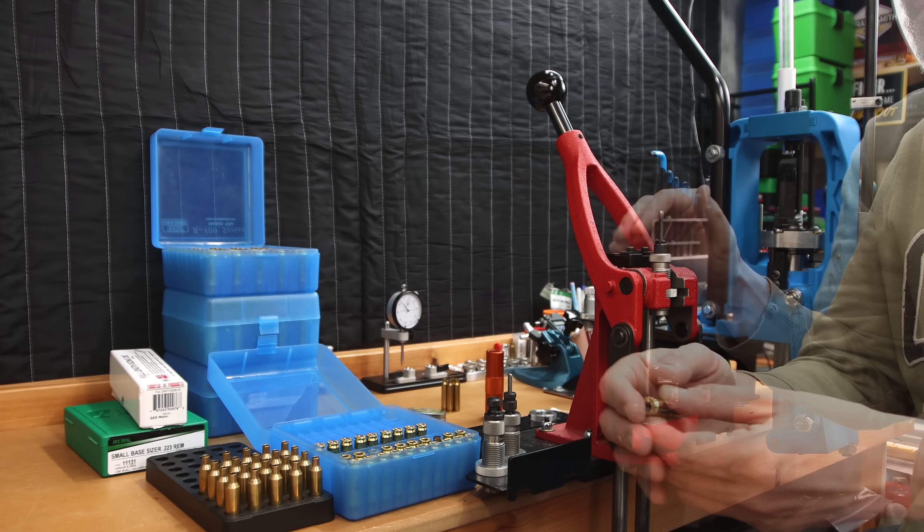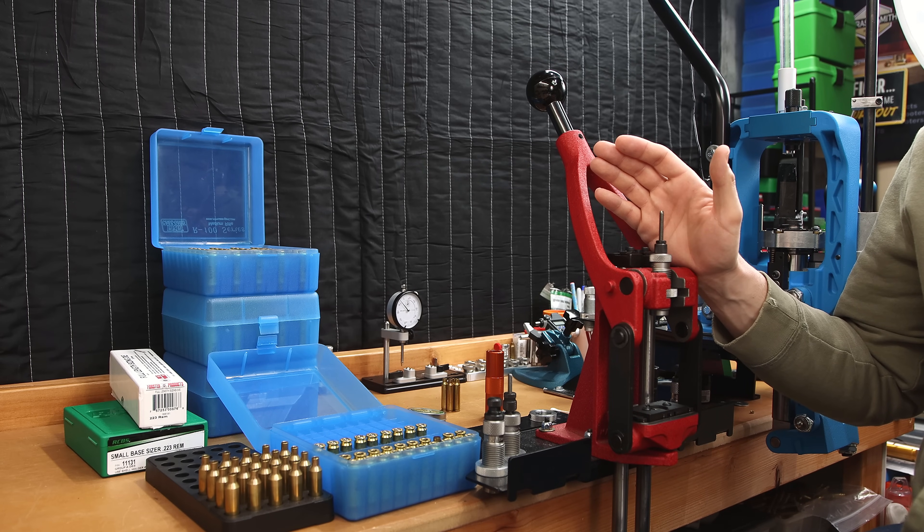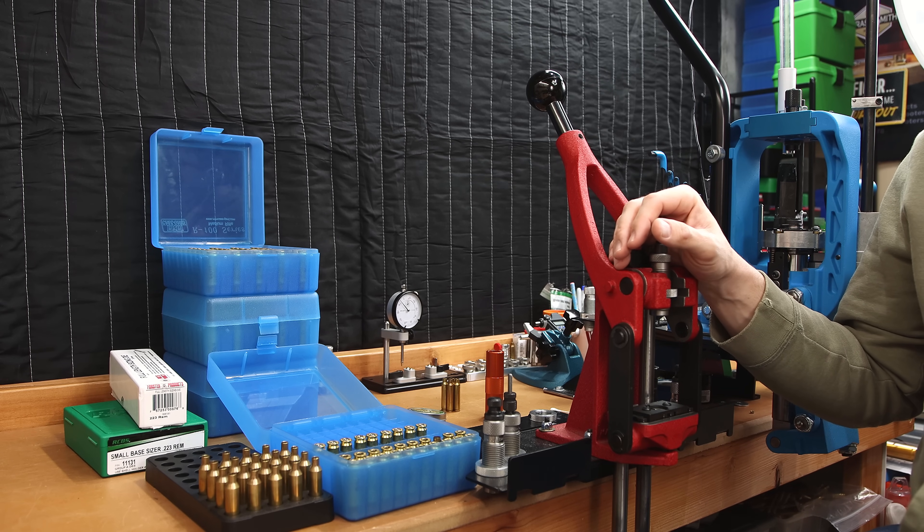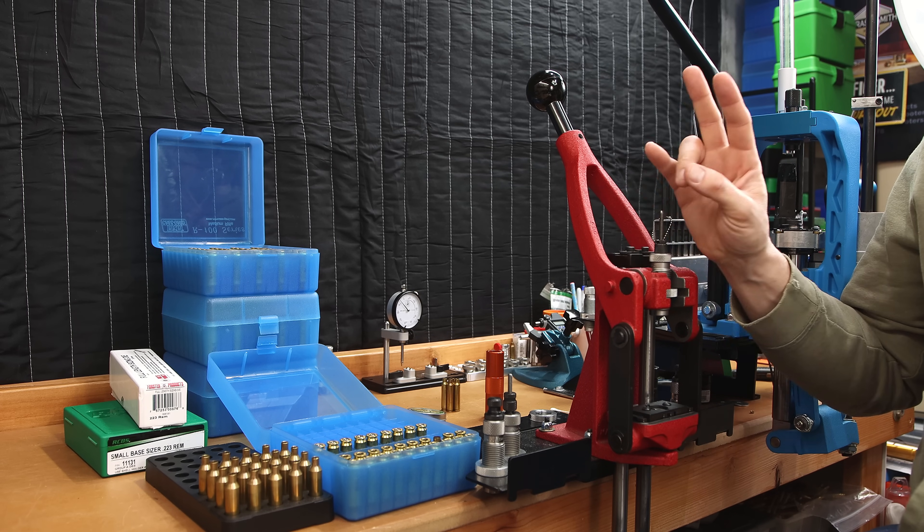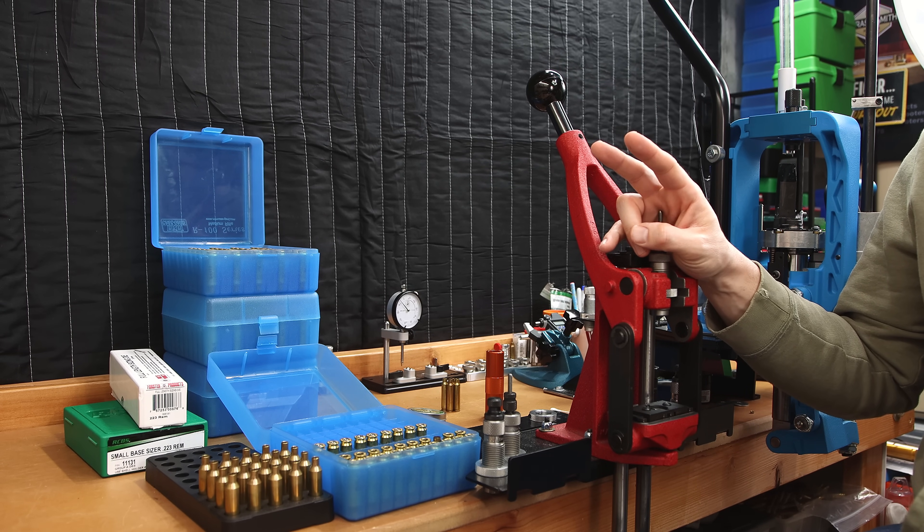The way I set up my die, some would call bump sizing. However, this is a full length size. It's sizing all the sides of the case, including the shoulder. The general rule, if you want to call it that, is you want to bump the shoulder back at least two thousandths for a bolt action. We'll discuss this two thousandths number a little more in just a second.